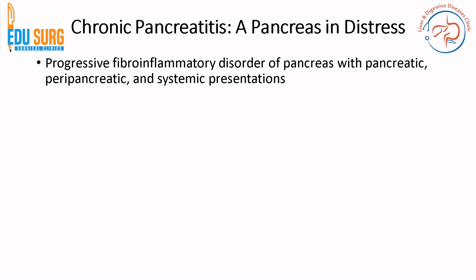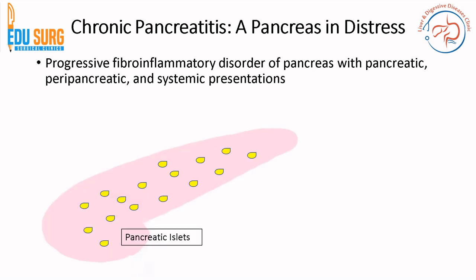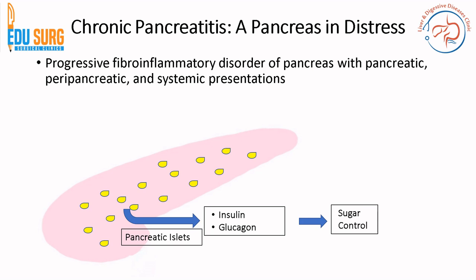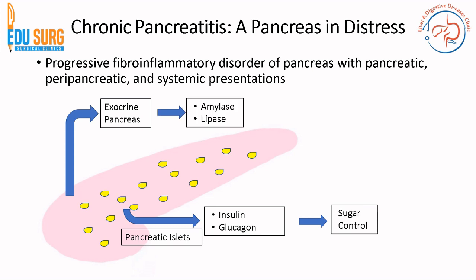Chronic pancreatitis is essentially a progressive fibroinflammatory disorder that causes pancreatic, peripancreatic, and systemic presentations — in short, a pancreas crying out for help. The basic understanding is that pancreatic islets are present throughout the pancreas, secreting insulin and glucagon for sugar control, while the exocrine part secretes amylase and lipase, responsible for digestion of proteins and fats.